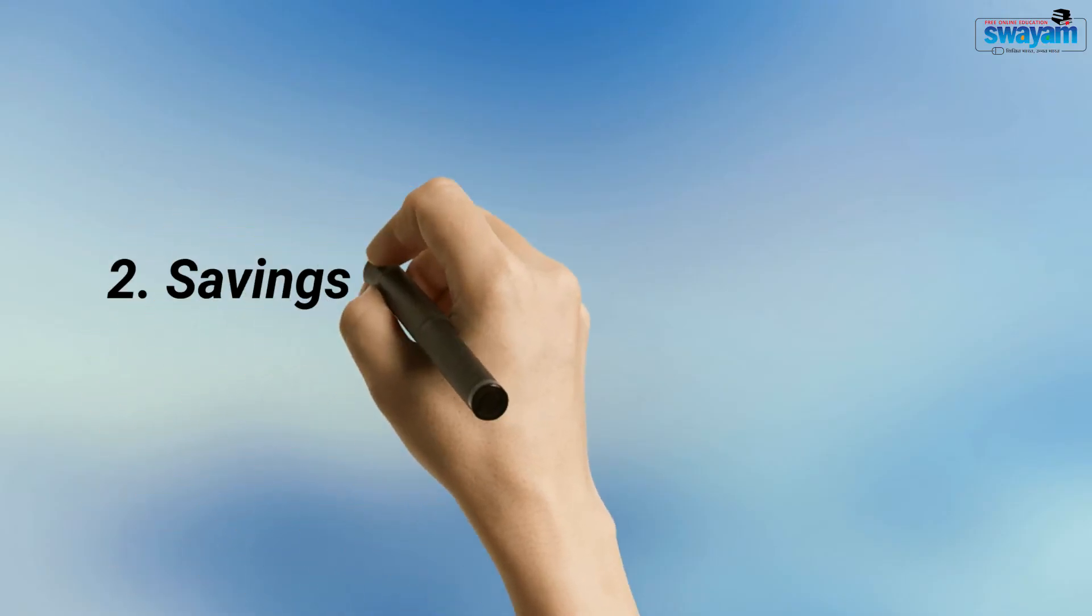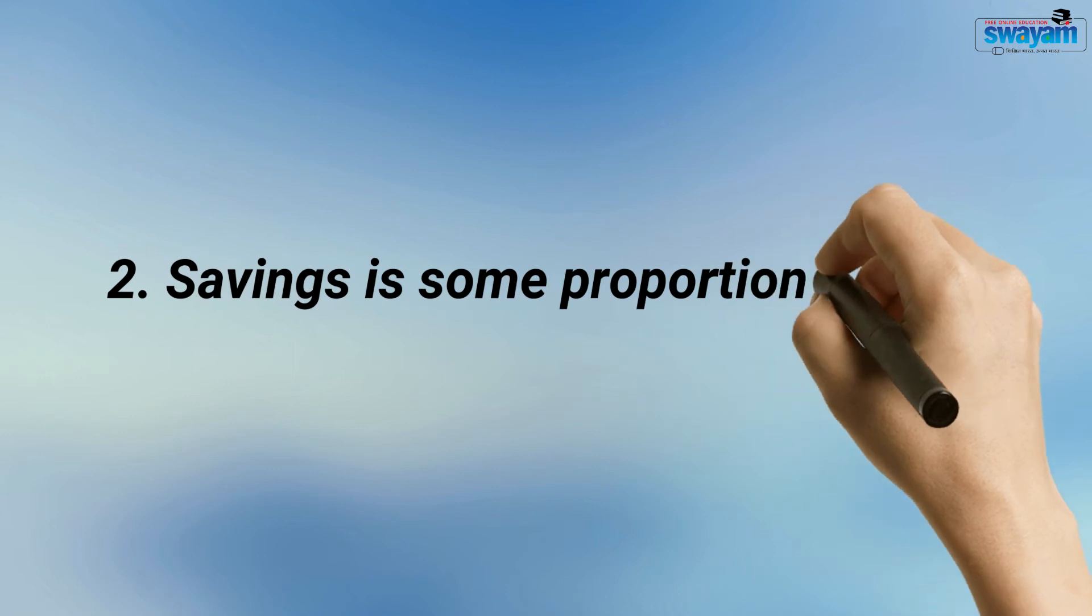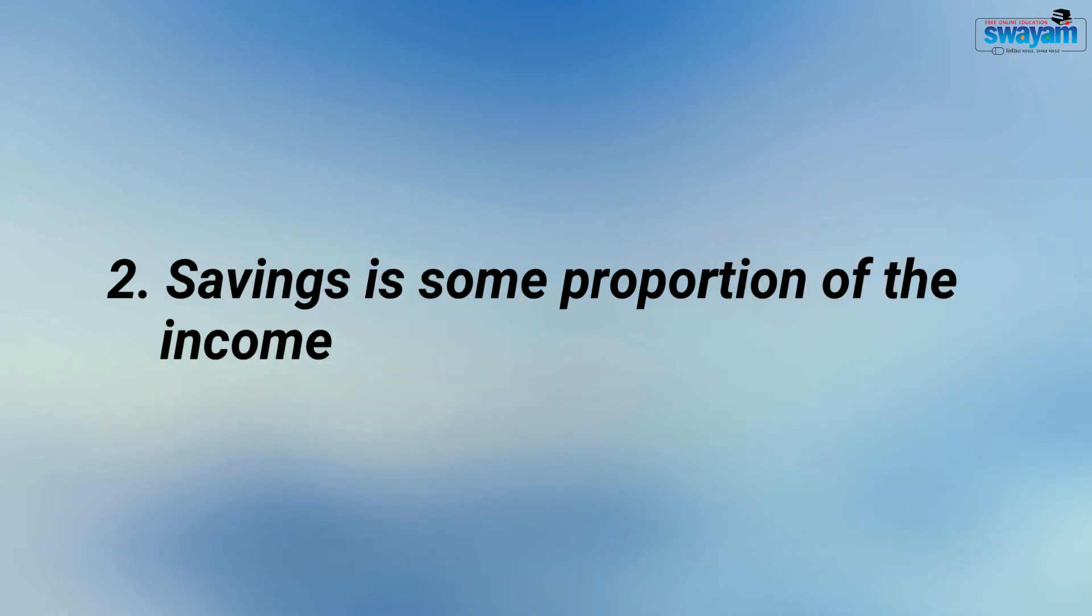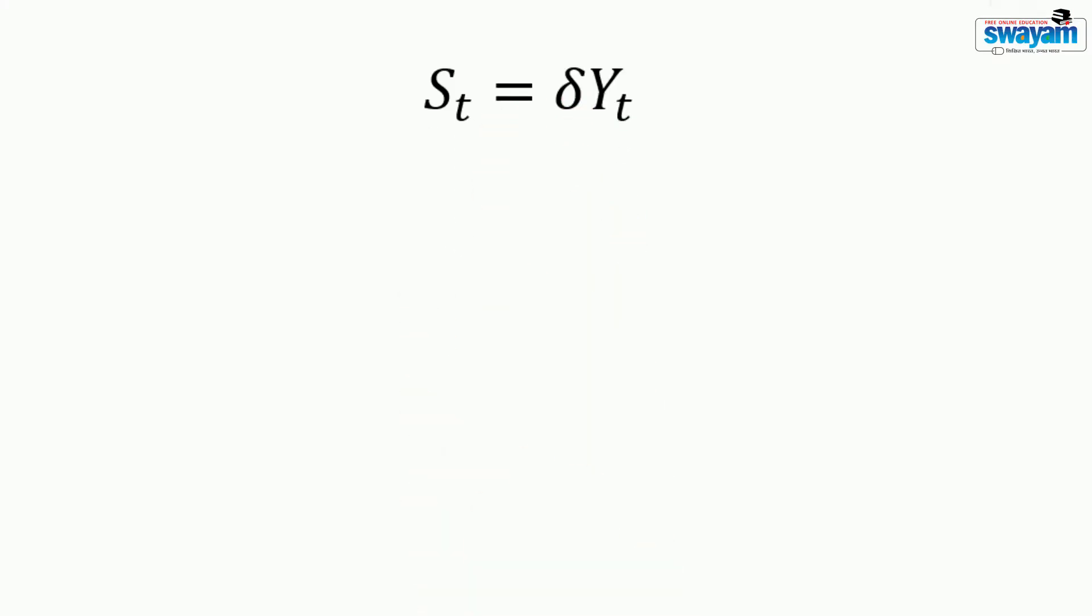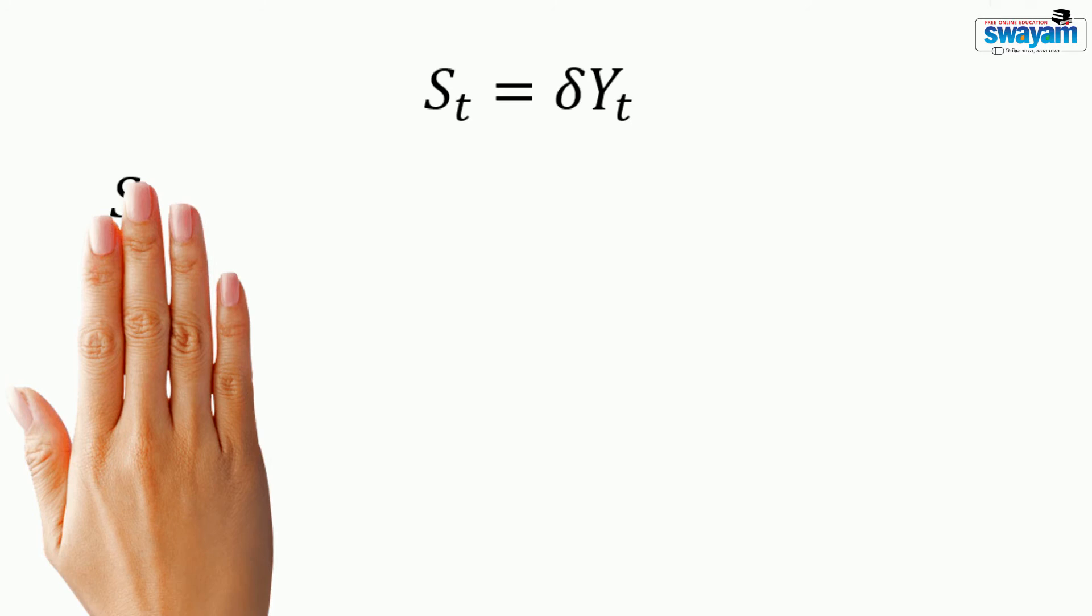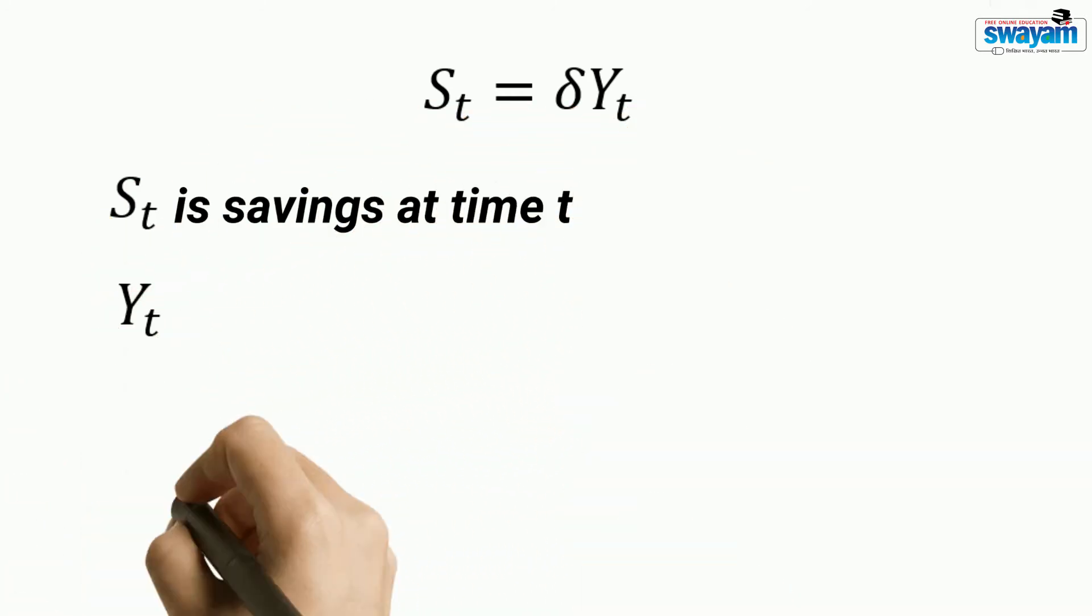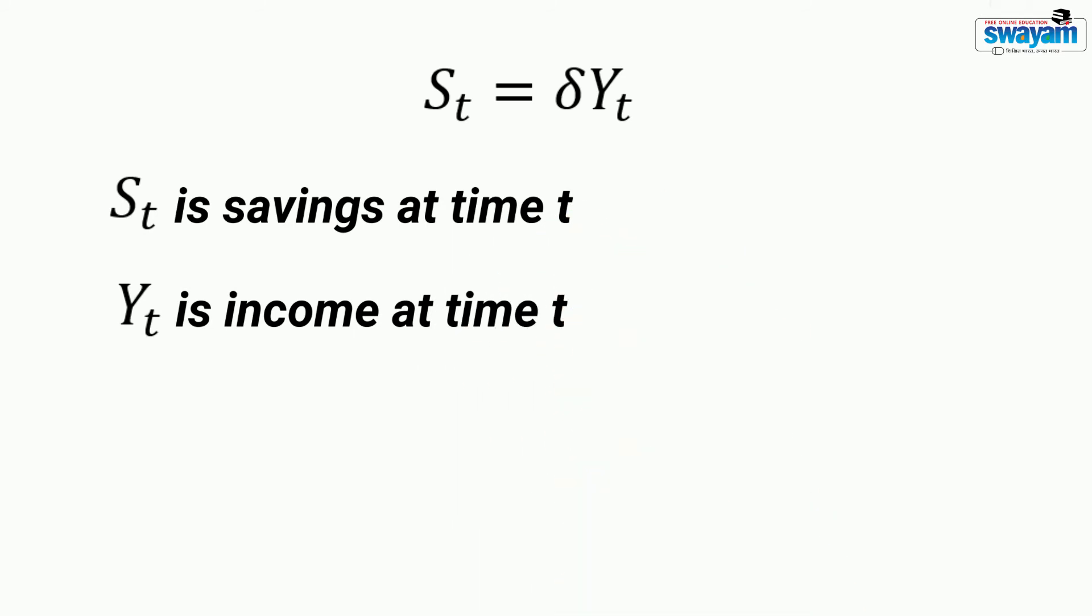Second assumption says that savings is some proportion of the income. How will you express this assumption mathematically? This assumption may be mathematically expressed like this. ST is savings at time T. YT is the income at time T.